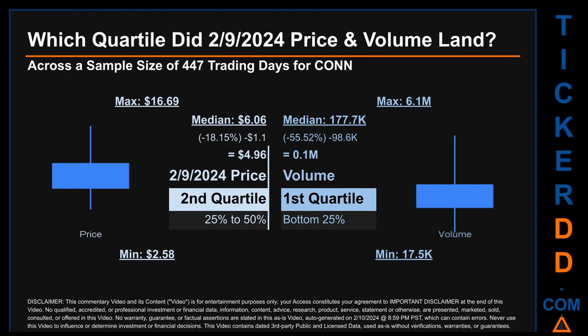Hello, my name is Maria. Which quartile did the February 9th, 2024 price and volume land in across a sample size of 447 trading days? The maximum end-of-day price for Conn was $16.69 while the minimum was $2.58. Within that price range, the February 9th price of $4.96 landed within the second quartile — putting it within the 25 to 50% range of all sampled end-of-day prices. The day's volume landed within the first quartile, at the bottom 25% of all sampled daily volume, which saw a max daily volume of 6.1 million and a minimum of 17,500. Quartiles tell us about the spread of a data set by breaking it into quarters, just like how the median breaks the set in half.